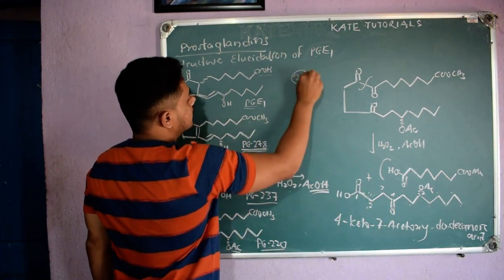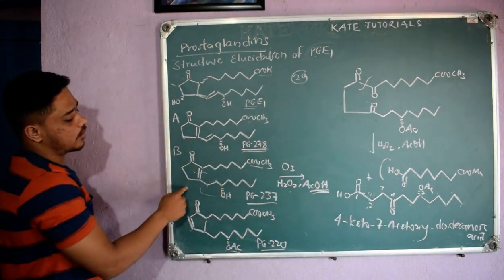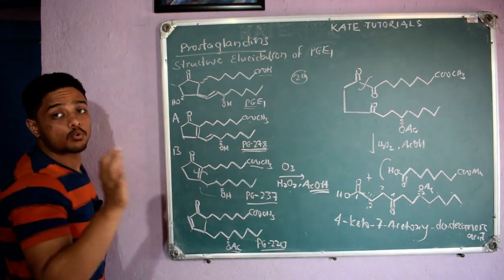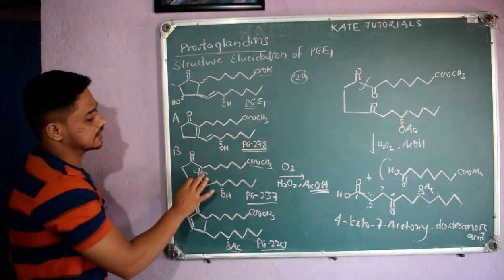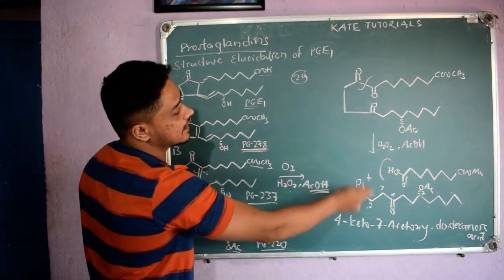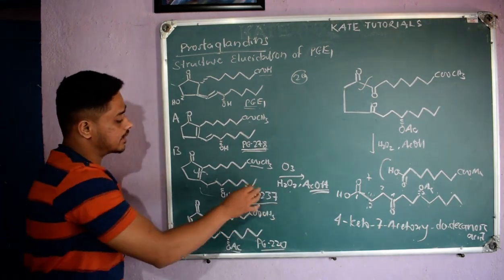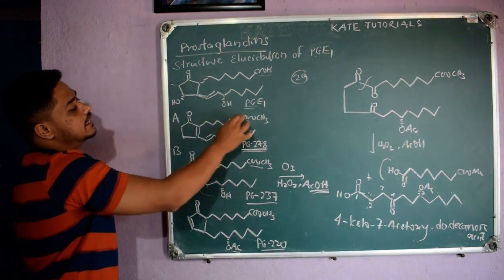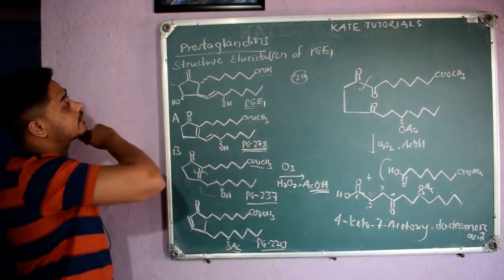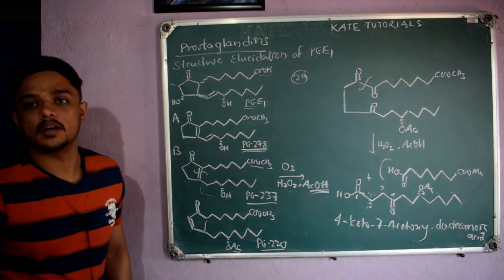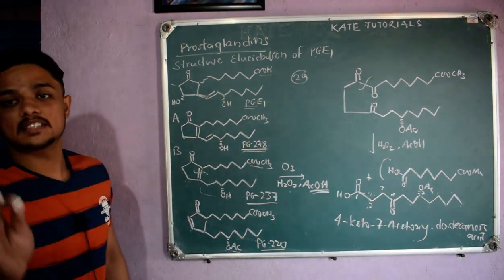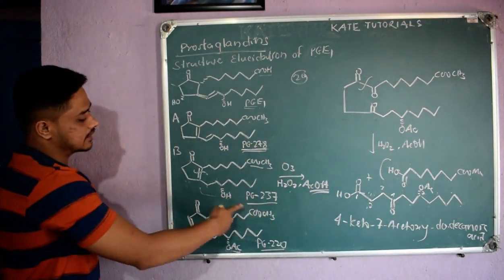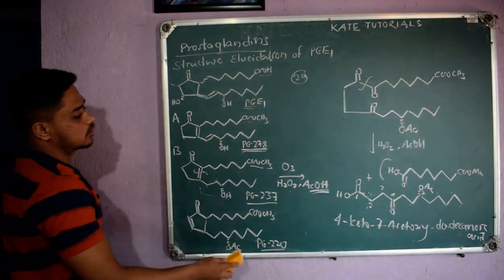They confirmed prostaglandins have 20 carbons. When they did ozonolysis with oxidizing agent they knew the pi bond is broken, so they expected the products and got them. From this they determined the structure of PGE1. This topic is the structure elucidation of PGE1, and this analysis was done with PG237.